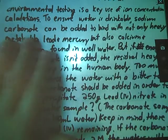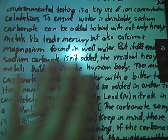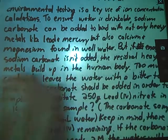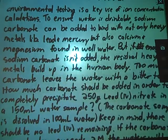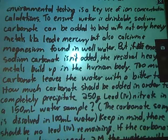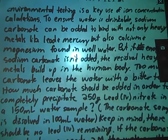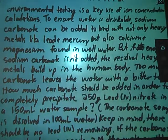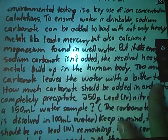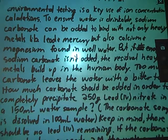To make water drinkable, sodium carbonate can be added to bind with not only heavy metals like lead and mercury but also calcium and magnesium found in well water. But if enough sodium carbonate isn't added, the residual heavy metals build up in the human body. So this is starting to sound like it's going to be a solution stoic problem because they already mentioned this sodium carbonate and we're talking about residual ions. So that kind of sounds like we're going to have to do some ion concentration stuff. Too much carbonate leaves the water with a bitter taste. Now I definitely know that I'm going to have to do some kind of ion concentration something.